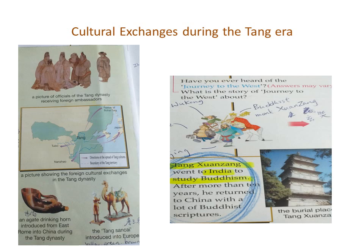Tang Zang went to India to study Buddhism, and after more than 10 years he returned to China with a lot of Buddhist scriptures. In the picture you can see the Buddhist monk Xuanzang, along with Wukong, Zhu Bajie, and Sha Wujing — if you know all four characters.